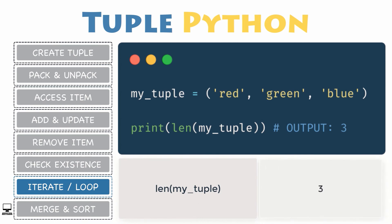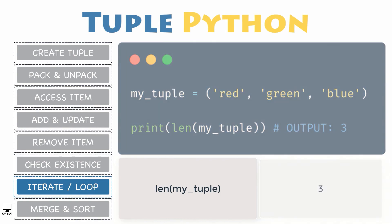Eventually, you may also want to find how many items a tuple has. In that case, you do not have to iterate through the entire tuple and count each item, but simply use the function len(), which returns the number of items inside your tuple.